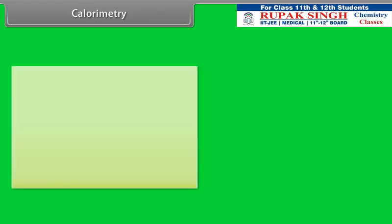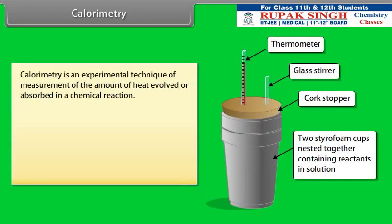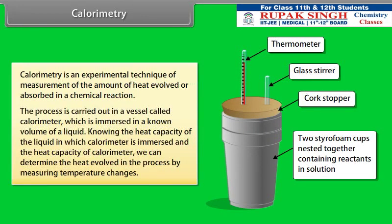Calorimetry is an experimental technique for measuring the amount of heat evolved or absorbed in a chemical reaction. The process is carried out in a vessel called a calorimeter, which is immersed in a known volume of liquid. By knowing the heat capacity of the liquid and the calorimeter, we can determine the heat evolved in the process by measuring temperature changes.